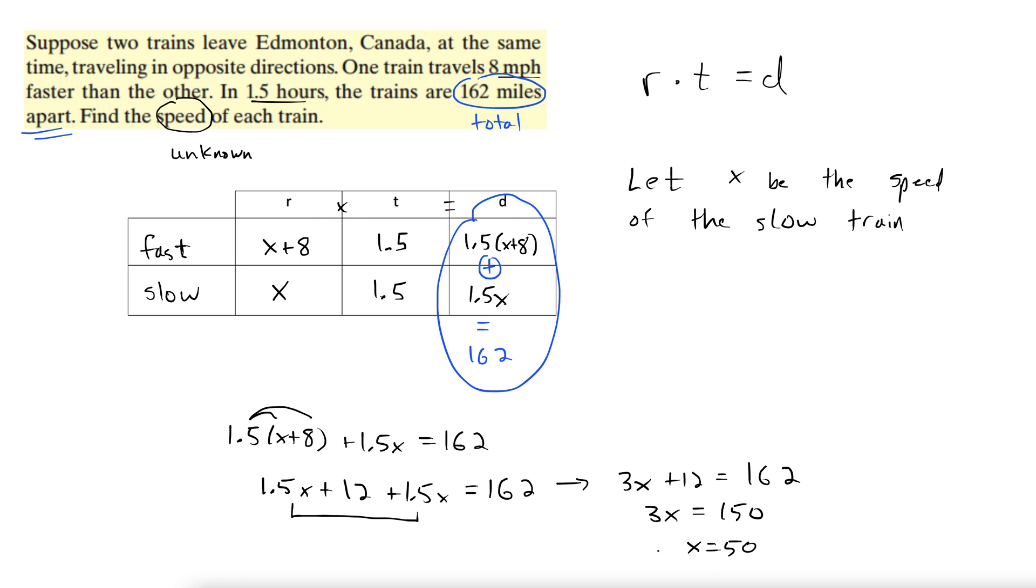But you wouldn't want to just leave it like this. We haven't answered the question. We don't have any units. So let's go back up to see what the question is asking. This is an important step at the end of every word problem: have I answered the question in its entirety, and is my answer reasonable? Find the speed of each train. Well, we have found the speed of the slow train.